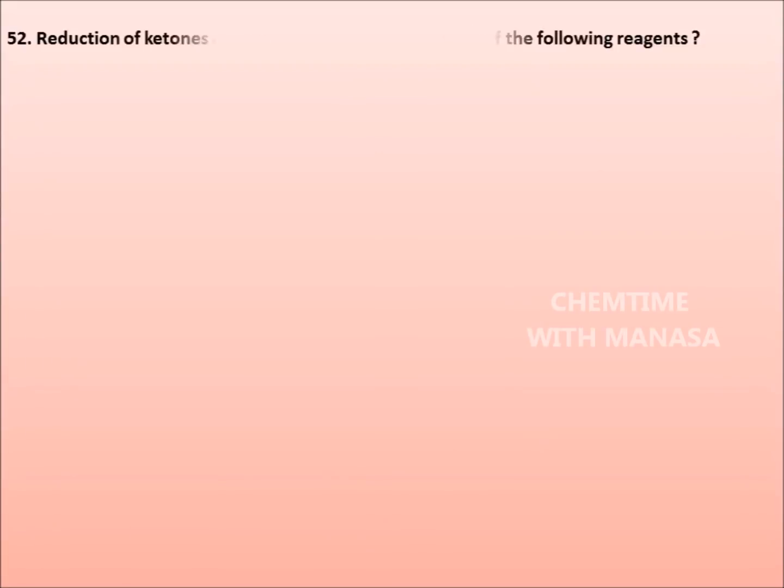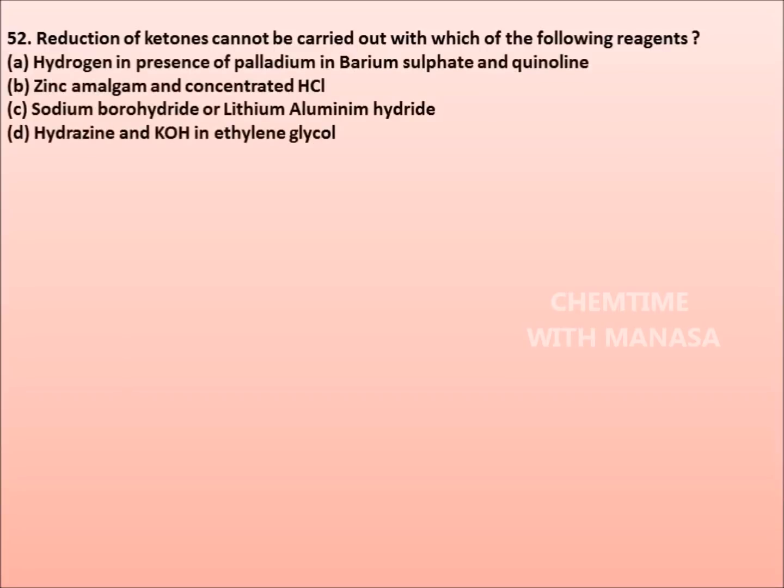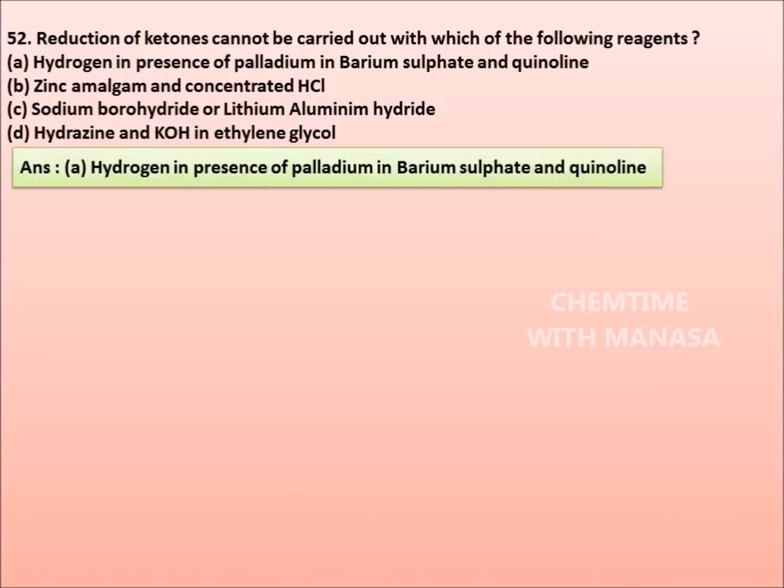Question number 52. Reduction of ketones cannot be carried out with which of the following reagents? Hydrogen in presence of palladium in barium sulfate and quinoline, zinc amalgam and concentrated HCl, sodium borohydride or lithium aluminum hydride, hydrazine and KOH in ethylene glycol. The correct answer is option A: Hydrogen in presence of palladium in barium sulfate and quinoline.